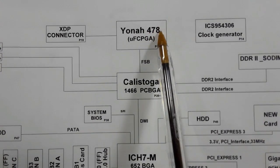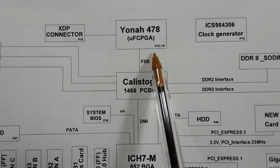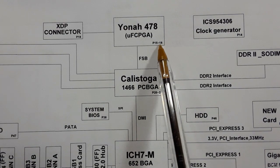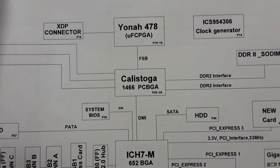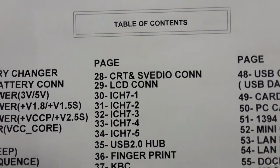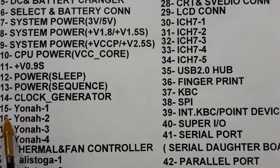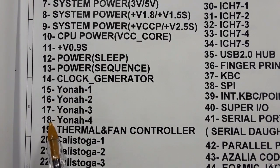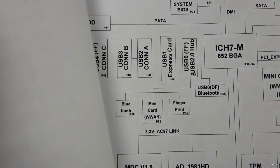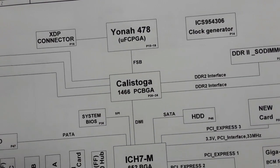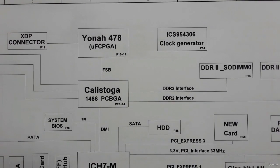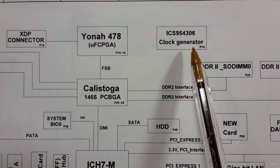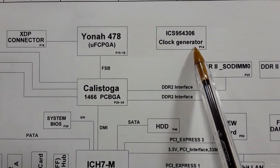The CPU is a U478 type, covered in pages 15 to 18. Always near the processor we have the clock generator, which generates the clock signal or the timing.